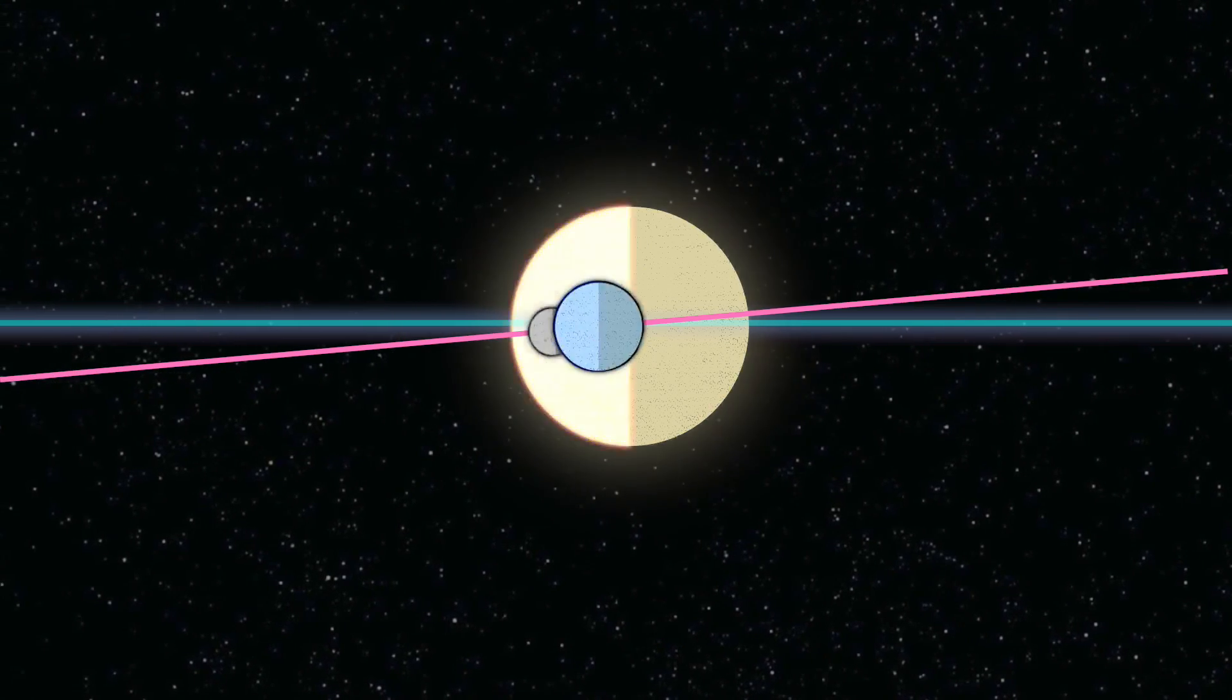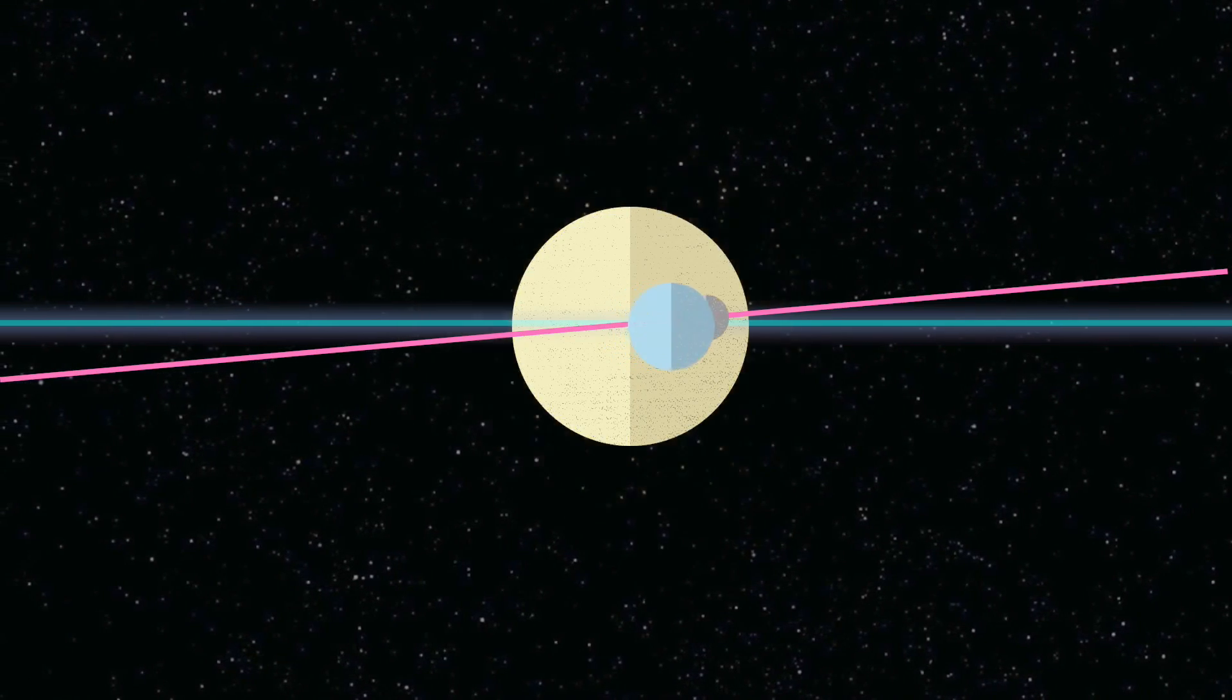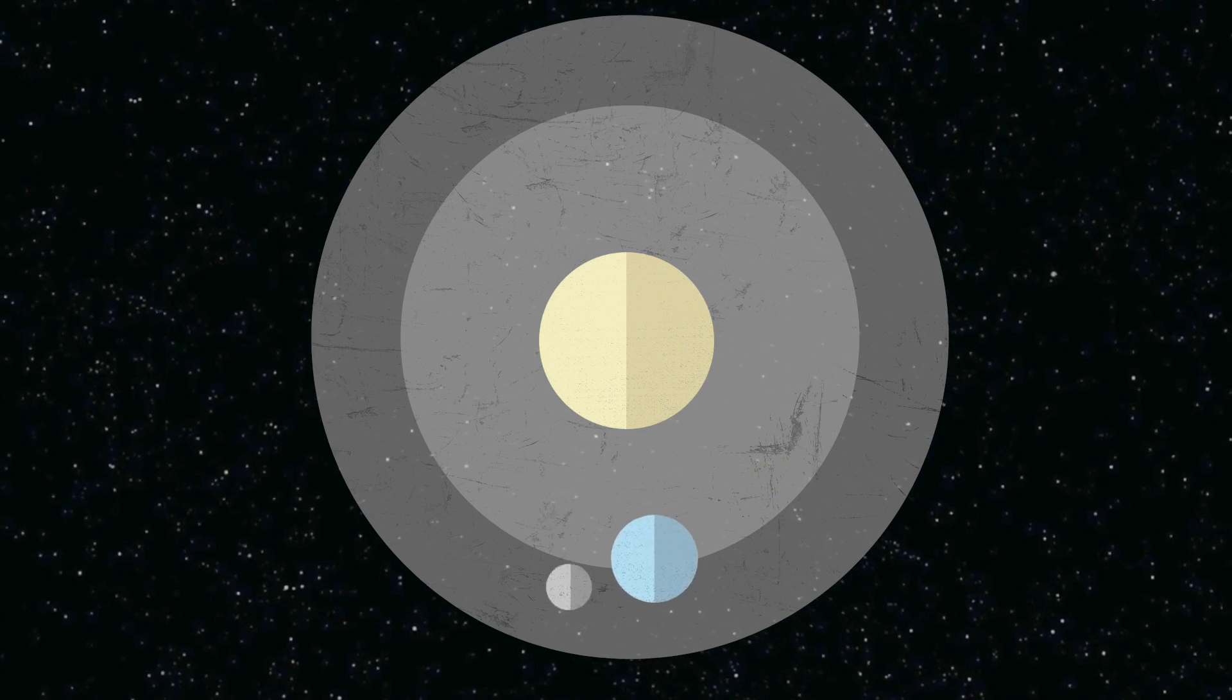The orbit of the Moon is at a 5-degree tilt, so you can imagine how fantastic it is when it aligns perfectly with the Sun and Earth.